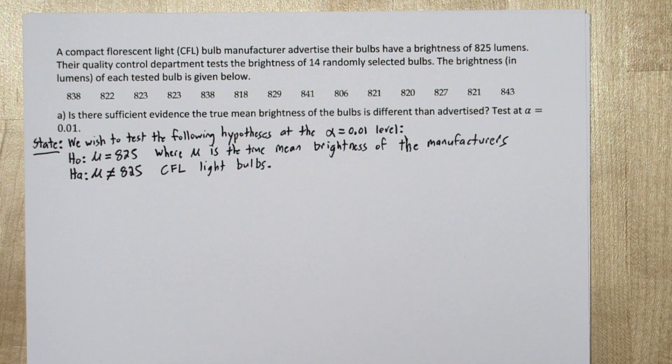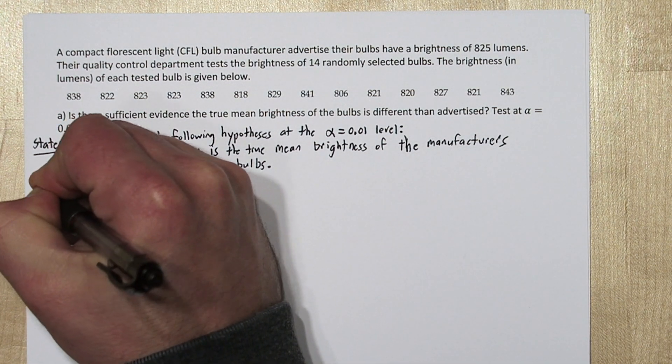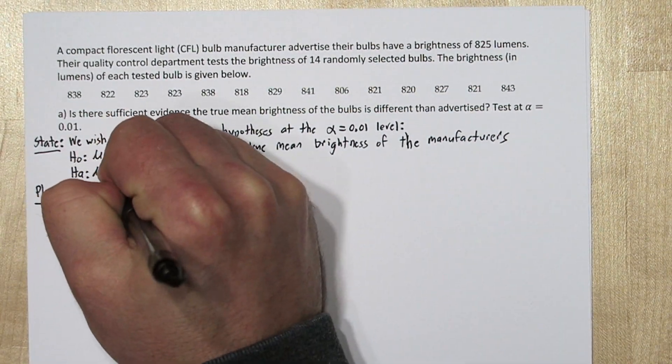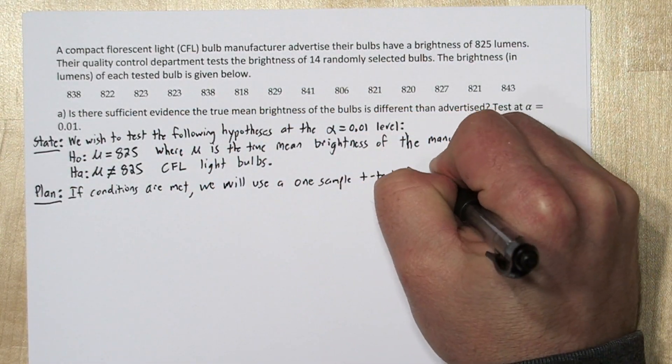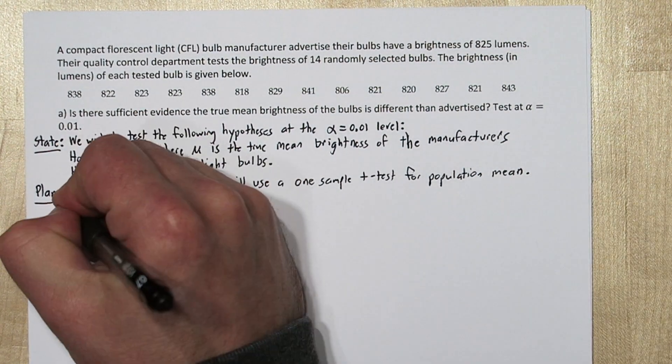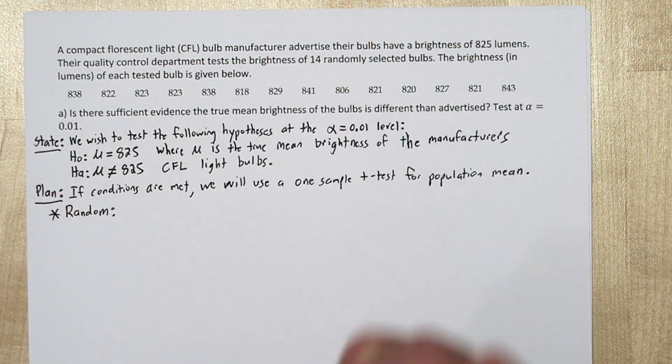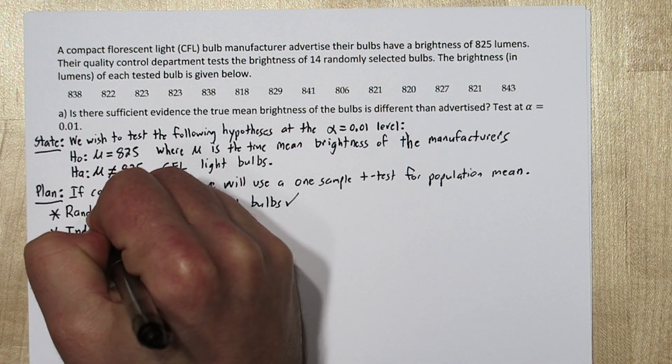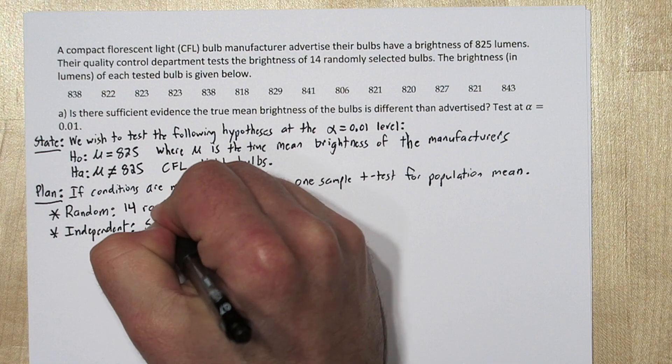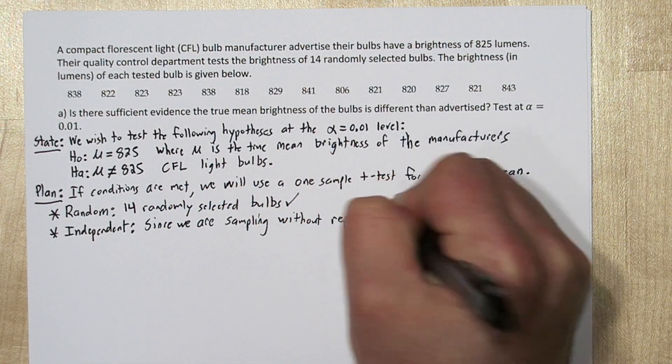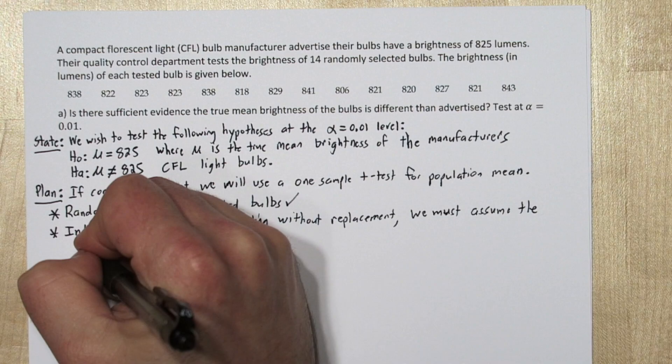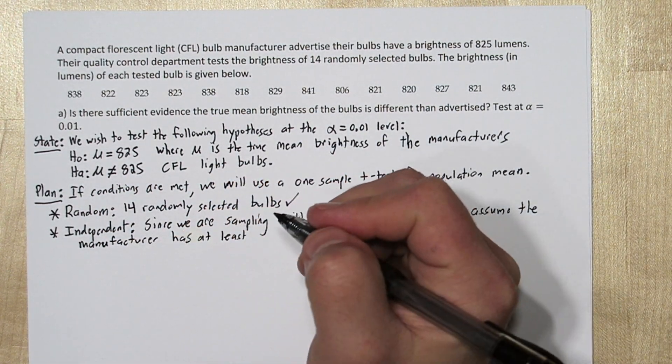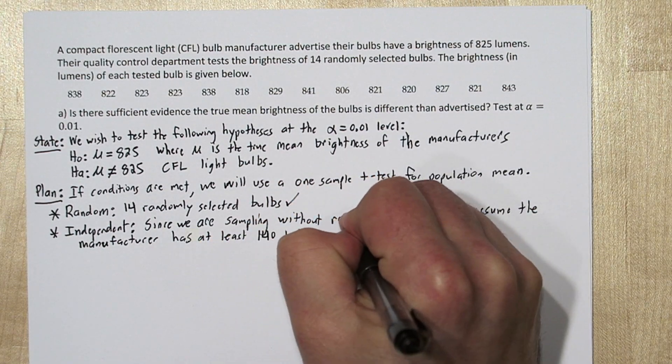We need two things in our plan step: our inference method and to check conditions. So if conditions are met, we will use a one sample t-test for population mean. Our first condition is the random one. Now these were 14 randomly selected bulbs, so that condition is met. Next is the independent condition. Since we're sampling without replacement, we need to assume the manufacturer has at least 140 bulbs for the 10% condition to be met. That seems like a fair assumption, so that condition is met.